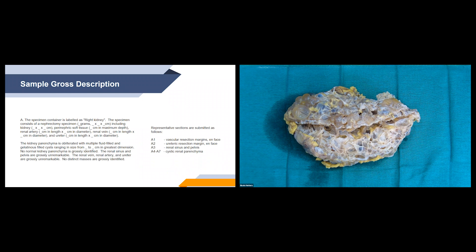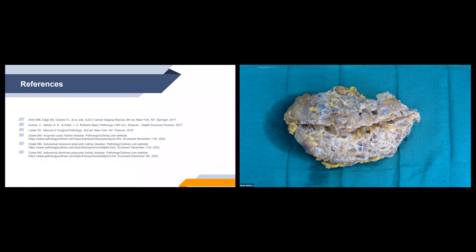Our section code will be representative sections: vascular margin, ureteric margin, a section of renal sinus and pelvis, and cystic renal parenchyma. That's all we have today — thank you everyone for attending today's session.